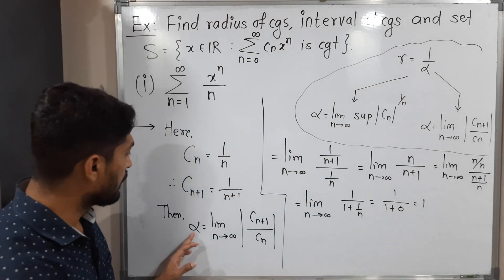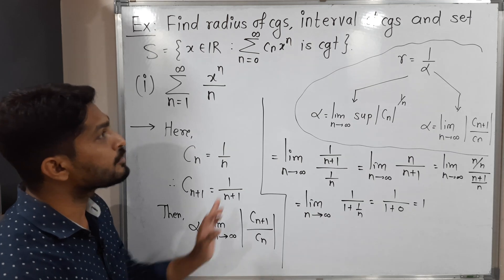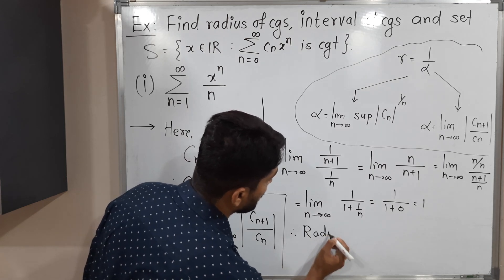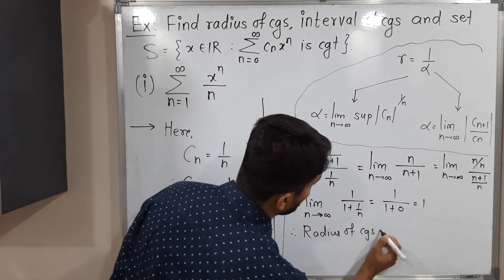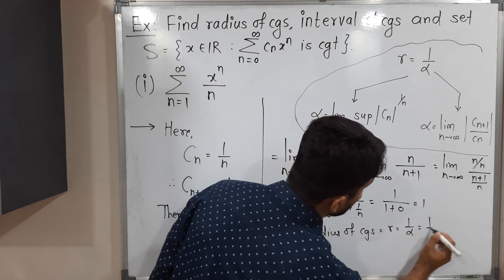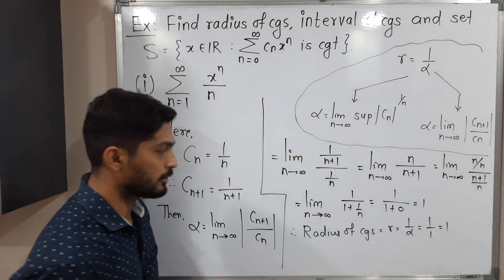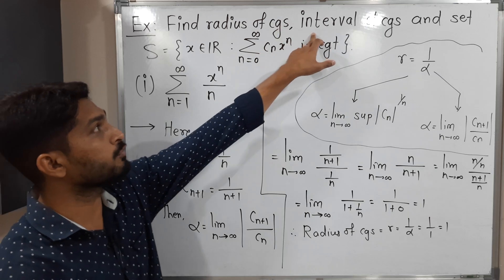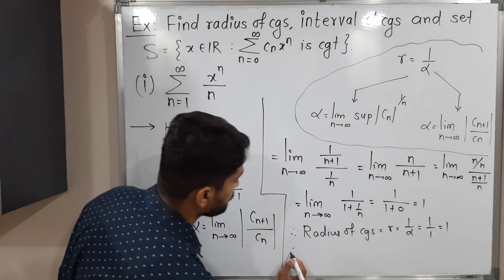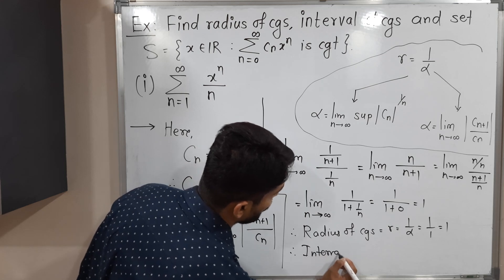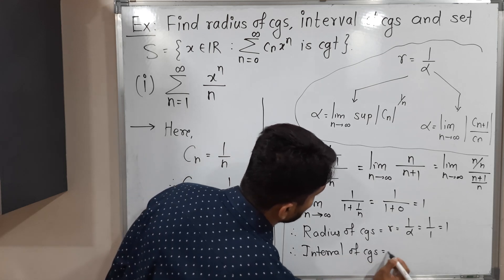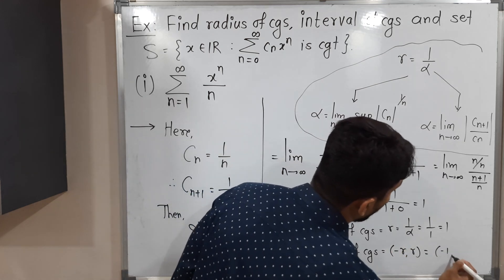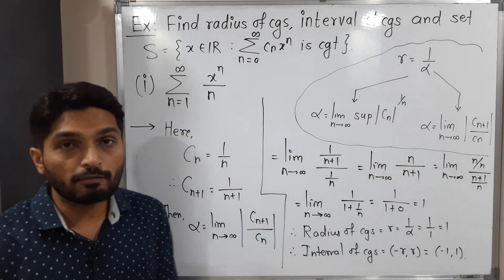We have to find the radius of convergence whose formula is 1 upon alpha. Therefore radius of convergence R equals 1 by alpha. Alpha is 1, so 1 upon 1 is 1. The radius of convergence is 1 — the first task is done. For the interval of convergence, it has the simple formula (−R, R). Since R = 1, the interval of convergence is (−1, 1).